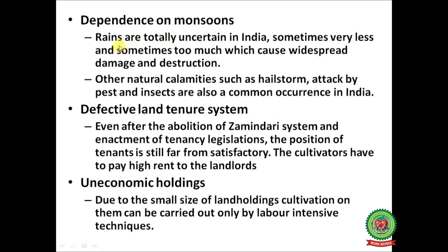Dependence on monsoon: rains are totally uncertain in India — sometimes too little and sometimes too much — causing widespread damage and destruction to crops. Other natural calamities such as hailstorms and attacks by pests and insects are also common. Defective land tenure system: even after the abolition of zamindari and enactment of tenancy legislations, the position of tenants is still unsatisfactory. Cultivators pay high rent to landlords, and due to the small size of land holdings, cultivation can be carried out only by labor-intensive techniques.